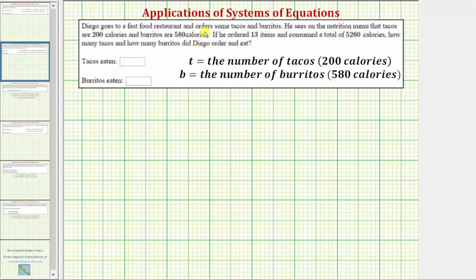Diego goes to a fast food restaurant and orders some tacos and burritos. He sees on the nutrition menu that tacos are 200 calories and burritos are 580 calories. If he ordered 13 items and consumed a total of 5,260 calories, how many tacos and how many burritos did Diego order and eat?